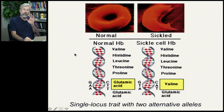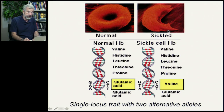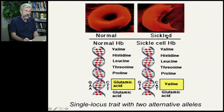We've seen this example before where you have normal hemoglobin with hockey-puck-shaped red cells, and then you have this point mutation that produces the sickle-shaped red blood cell. This is a single locus trait with only two alternative alleles: the normal and the sickled.